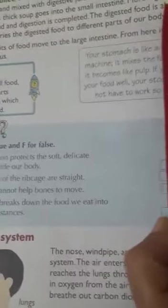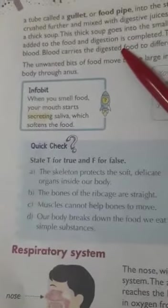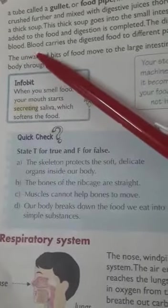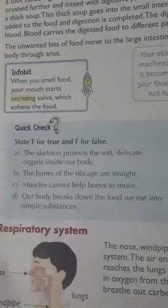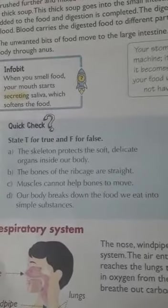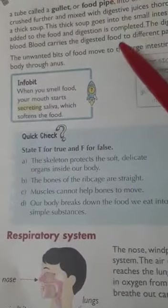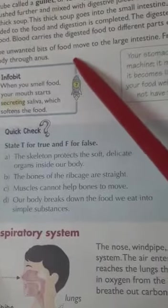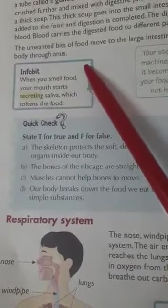This thick soup goes into the small intestine, where more digestive juices are added and digestion is completed. The digested food is absorbed by the blood, which carries it to different parts of our body — this is how our body parts get energy. The unwanted bits of food move to the large intestine, from where they are passed out of the body through the anus.